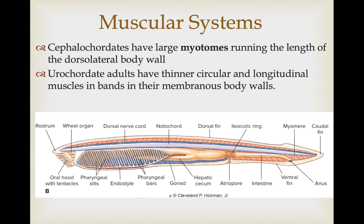Cephalochordates have large myotomes running the length of their dorsolateral body wall, as you can see here. The urochordates, however, have thinner, circular and longitudinal muscles found in bands in their more membranous body walls — remember, they're more sac-like.